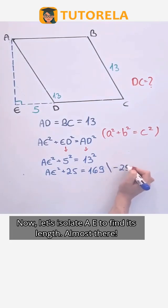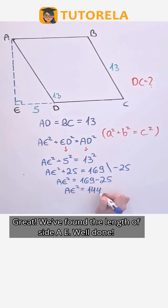Now, let's isolate AE to find its length. Almost there! Great! We've found the length of side AE. Well done!